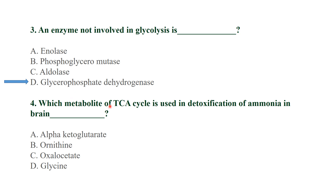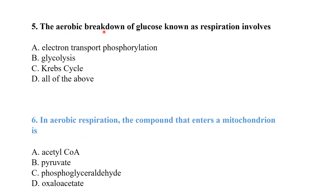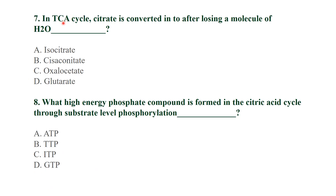Which metabolite of the tricarboxylic acid cycle is used in detoxification of ammonia in the brain? It is alpha-ketoglutarate. The aerobic breakdown of glucose, known as respiration, involves glycolysis, the Krebs cycle, and the electron transport chain. In aerobic respiration, the compound that enters the mitochondria is acetyl coenzyme A. In the TCA cycle, citrate is converted after losing a molecule of water.